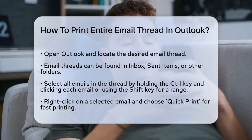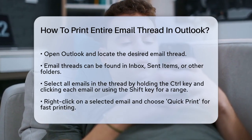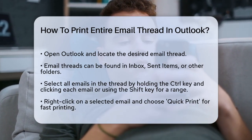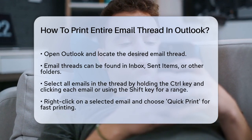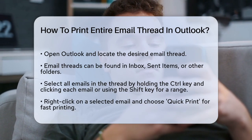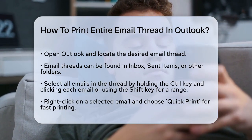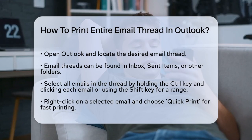First, open Outlook and navigate to the email thread you want to print. This could be in your inbox, sent items, or any other folder where you've stored the emails.